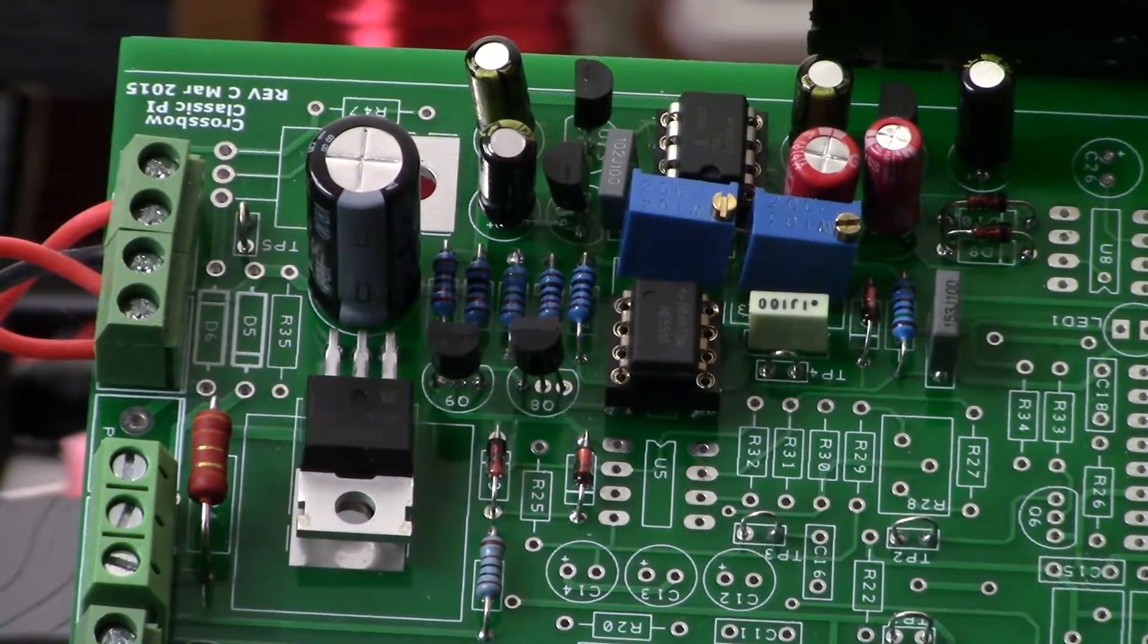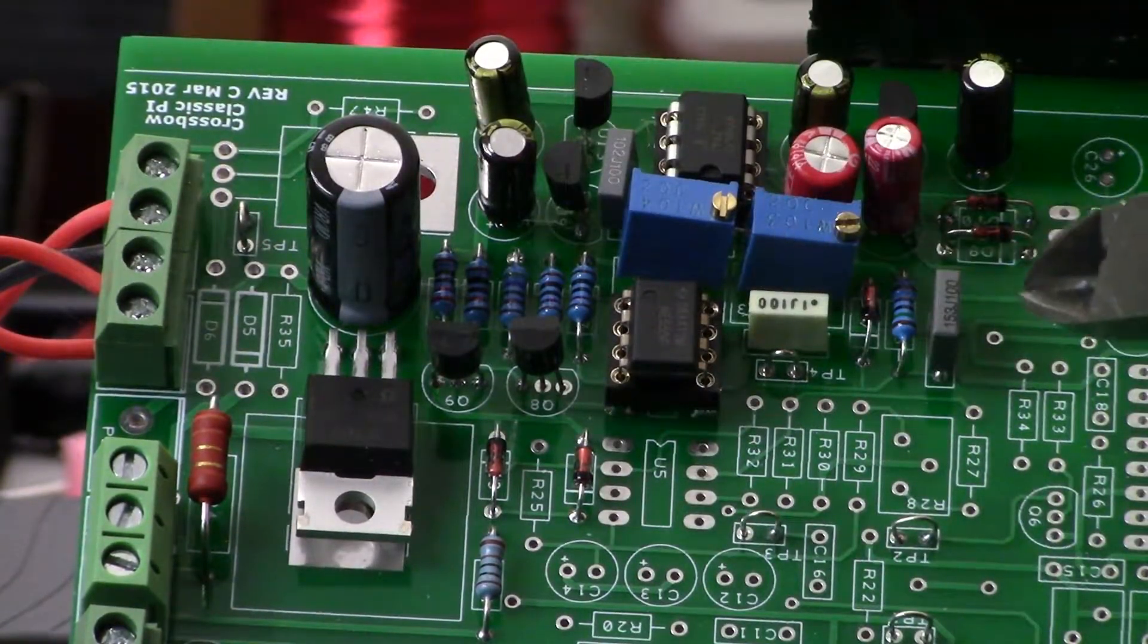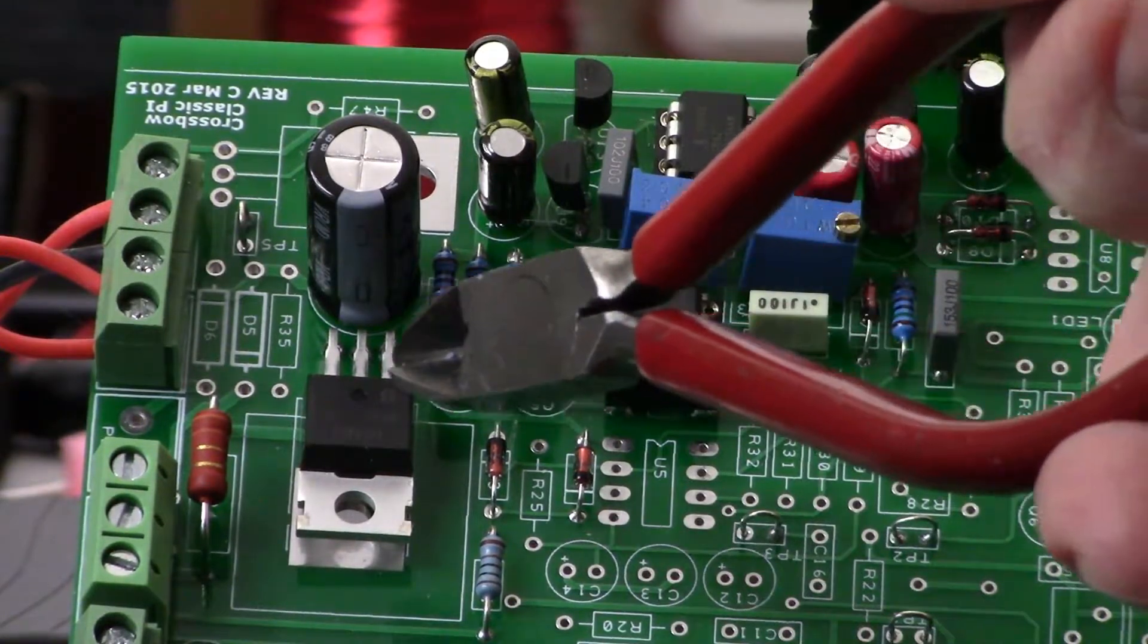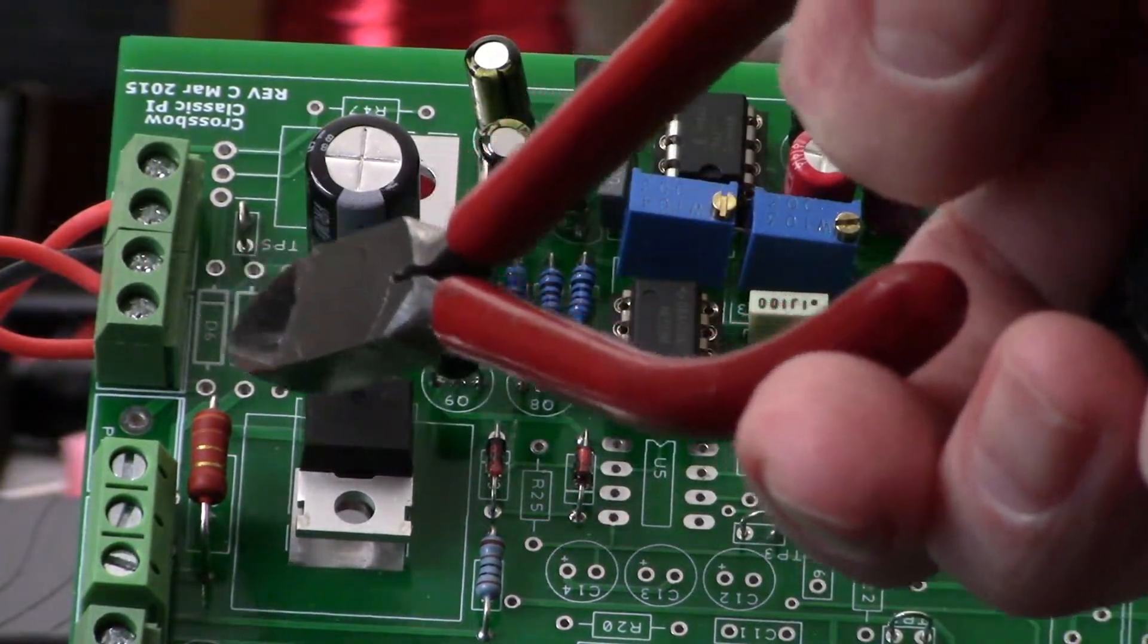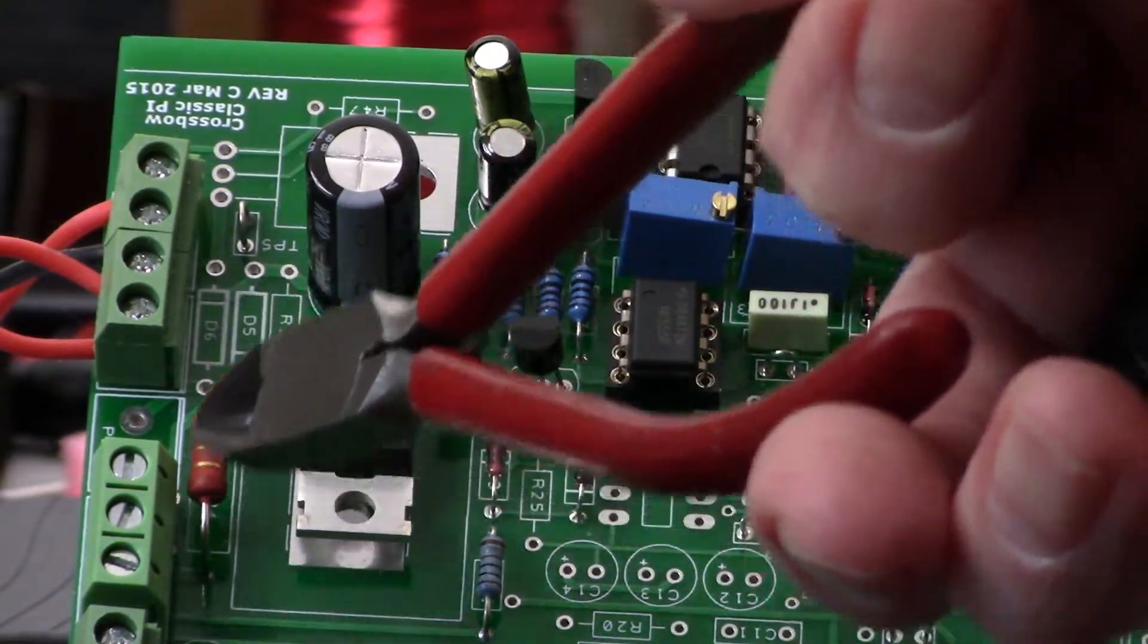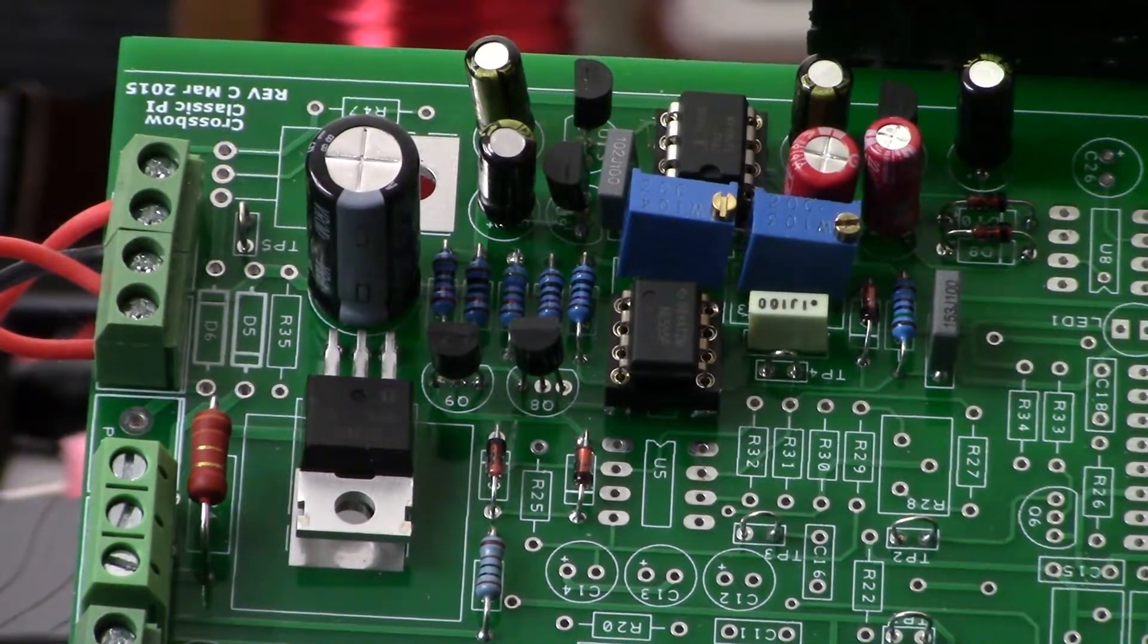So you can see the new components that we've installed here thus far. IRF 840 is our MOSFET, and we have an inline resistor in series with the MOSFET.